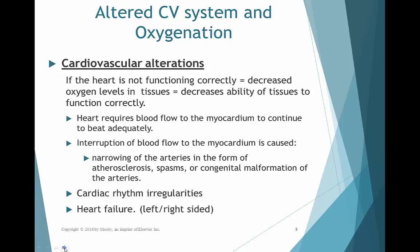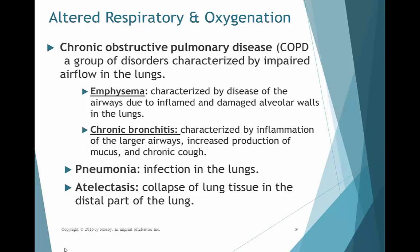Myocardial infarction often happens because of a narrowing of the arteries from atherosclerosis, spasms, a clot, or a congenital malformation. We also have changes in oxygenation with cardiac rhythm irregularities and heart failure — whether right-sided, left-sided, or both. People with COPD are unable to adequately oxygenate the blood. Emphysema damages and inflames alveolar walls. Patients with chronic bronchitis increase mucus production, which impedes gas diffusion across the membrane.